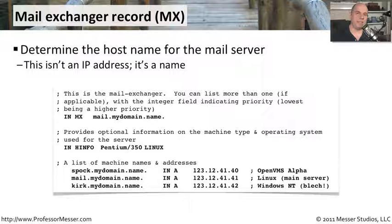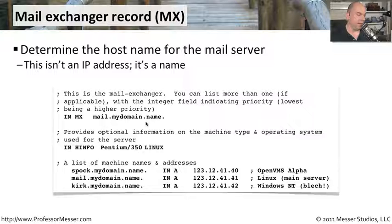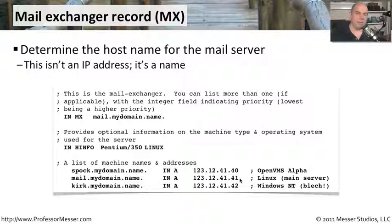If you have a domain and you're receiving emails on that domain, then the MX record is a very important record to have, because that's how everyone else will know where to send mail to people in that domain. In the sample DNS configuration file, you can see there is an MX record for mail.mydomain.name. And if anybody needed the IP address of that, you simply go to the address records for mail.mydomain.name to find that address. By querying the server for your domain and requesting the MX record, any other mail server will know exactly where to send those messages.